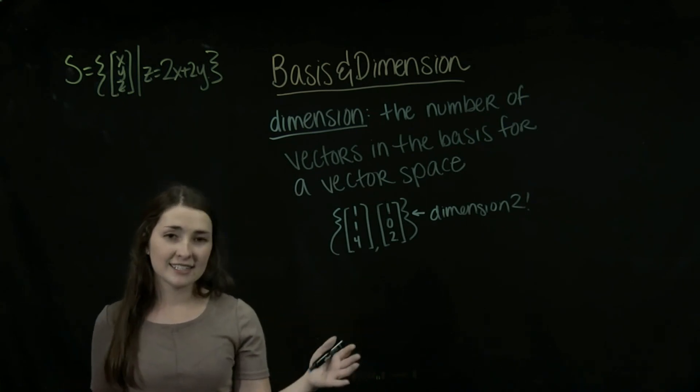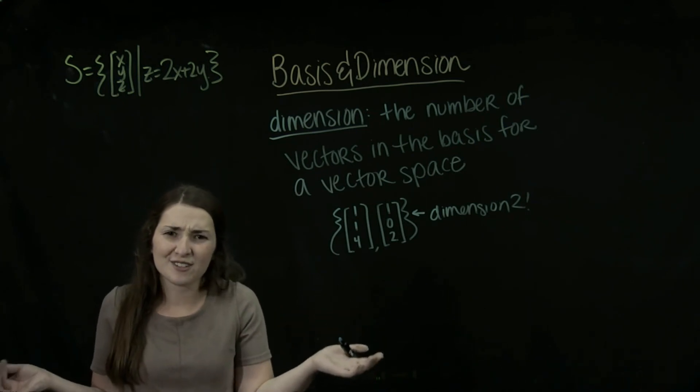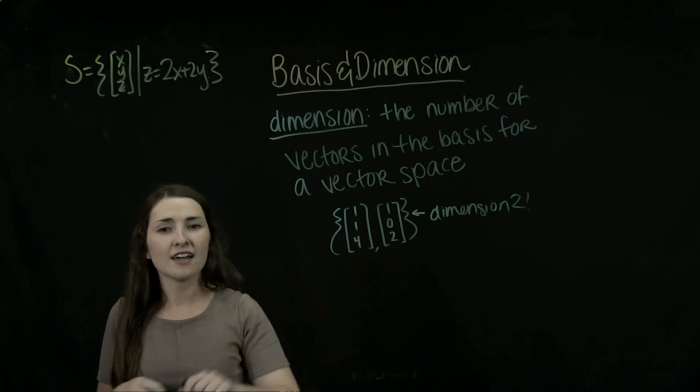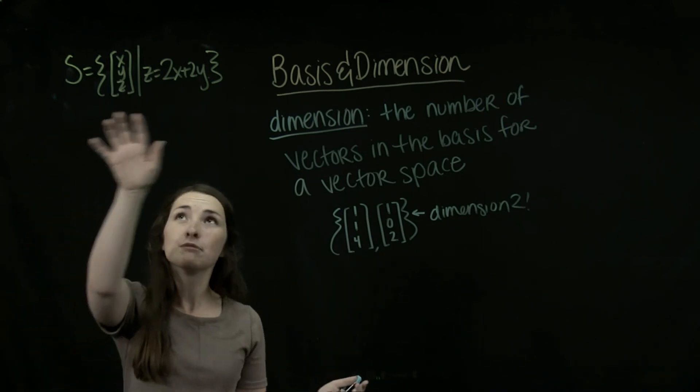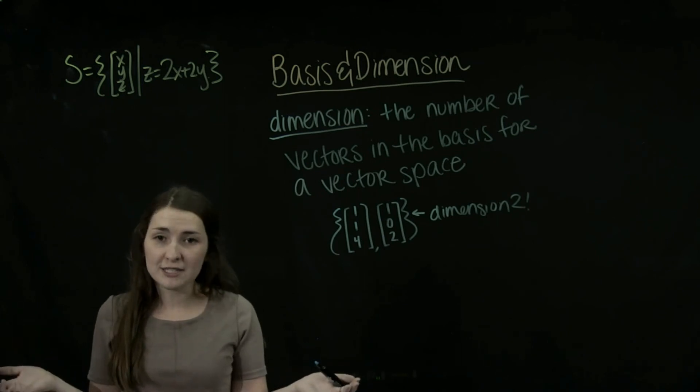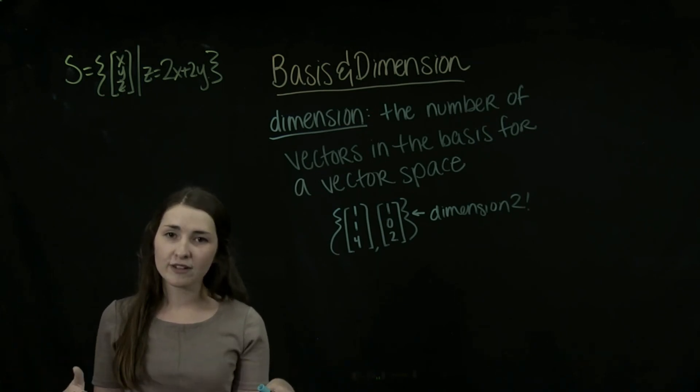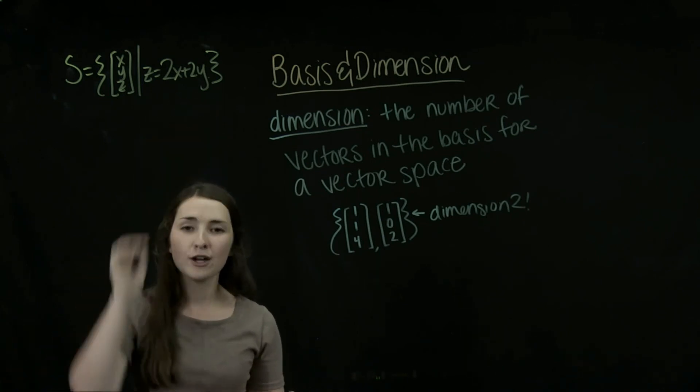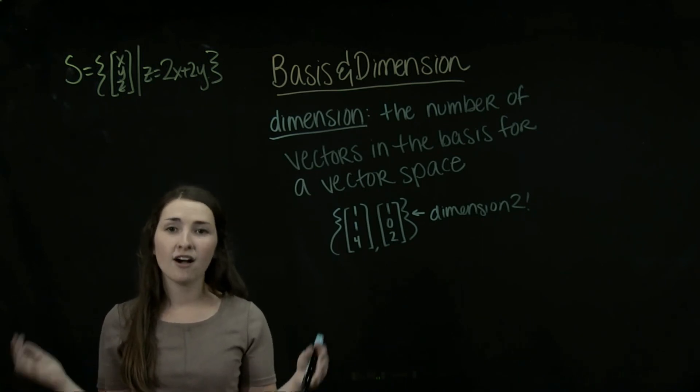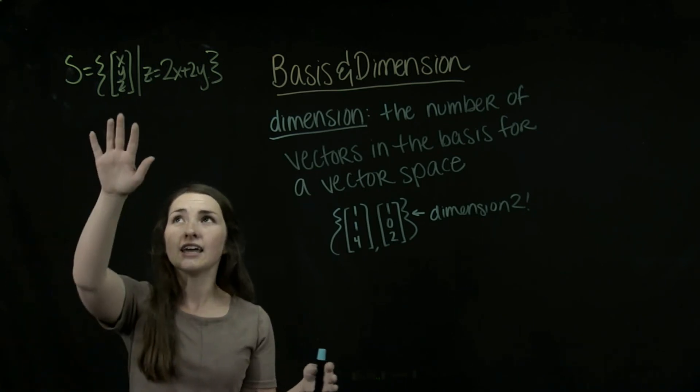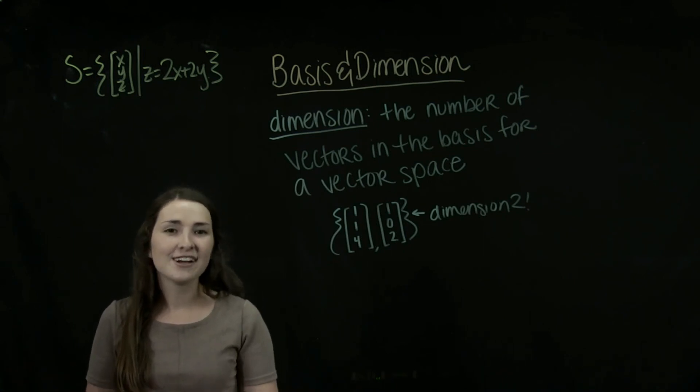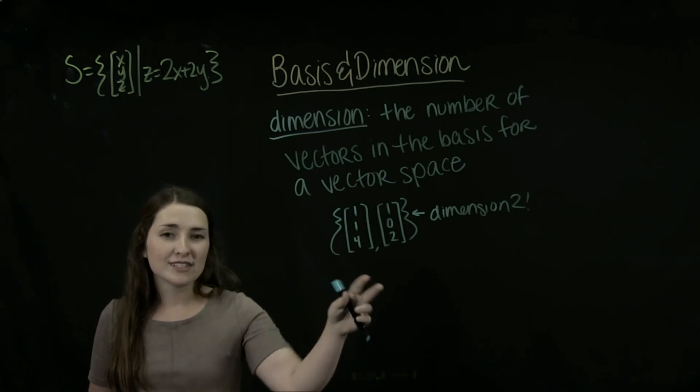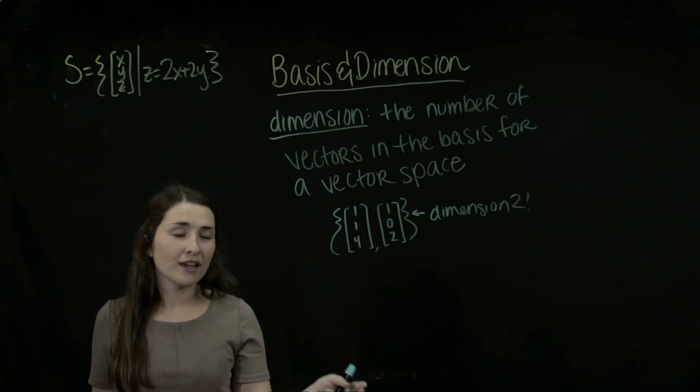So since it has dimension 2, we might be kind of confused because it's spanning some subspace of R3. However, our subspace here has only dimension 2. If you think about it graphically, we only have two variables that are defining all entries in our subspace. So it kind of makes sense that it has dimension 2. So even though this is spanning elements in R3, it has a basis of dimension 2.